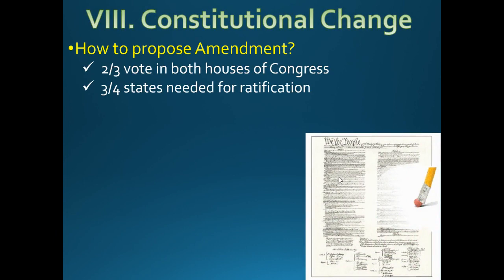To propose a constitutional amendment: you need a two-thirds vote in both houses of Congress — the Senate and the House of Representatives. Then it's sent to the states, where three out of four states need to vote for it to be ratified. Ratification is when you sign it, date it, stamp it, and then it becomes law.